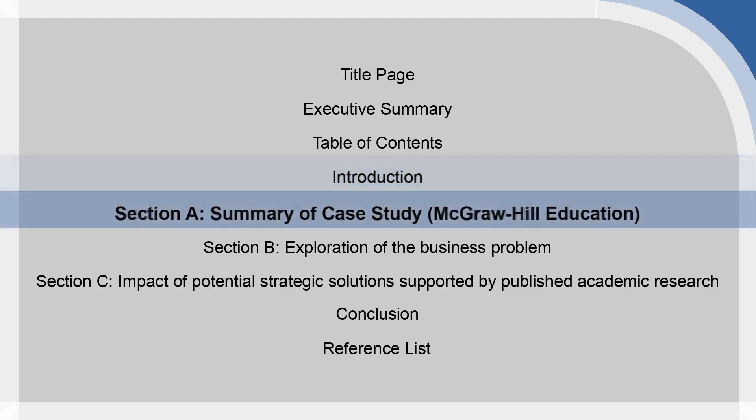For a report like this it should be relatively short — just explaining what you're going to be doing and any definitions you feel are necessary. Then we move on to Section A, the first part of the main body, where you give a summary of the case study: the information you found about McGraw-Hill Education that you think is relevant and important. This needs to be cited.